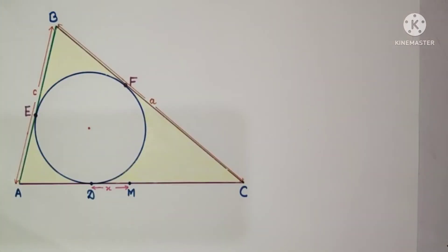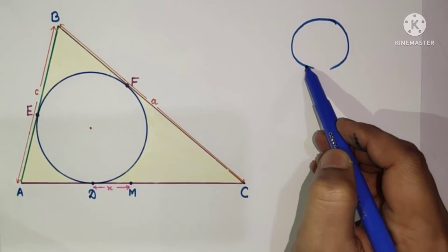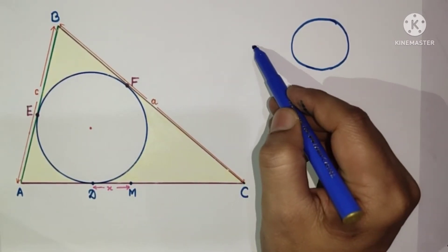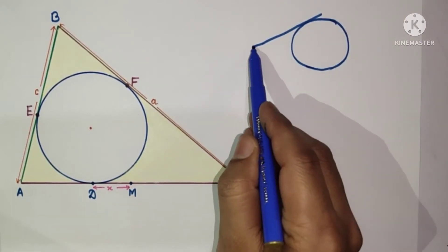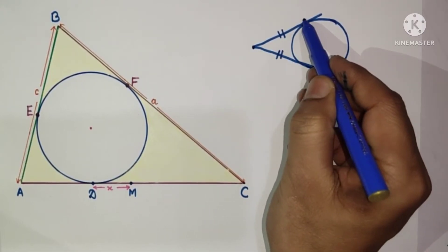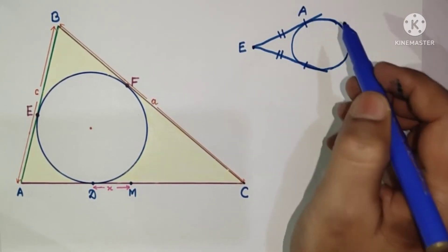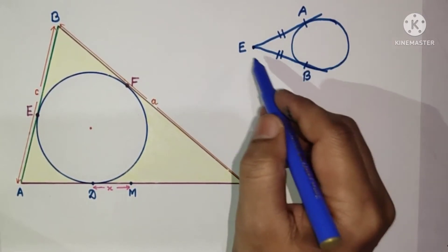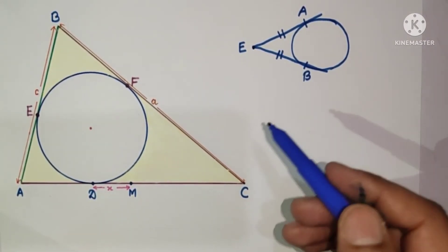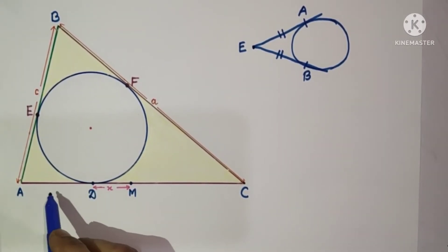As we know, tangents drawn from an exterior point to a circle are equal. If we draw two tangents from an exterior point E to a circle, then EA equals EB. We will use this concept here. So let the length of AD be K.